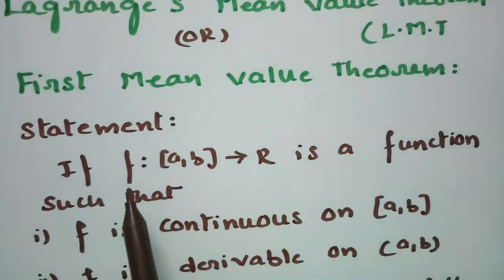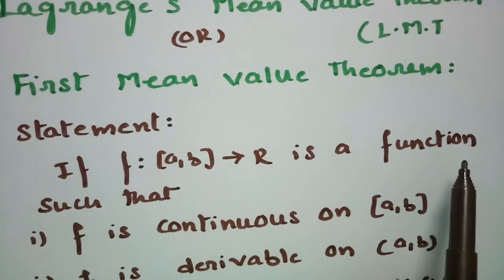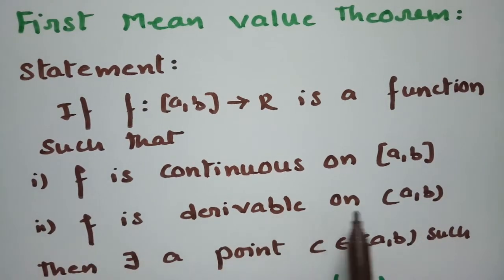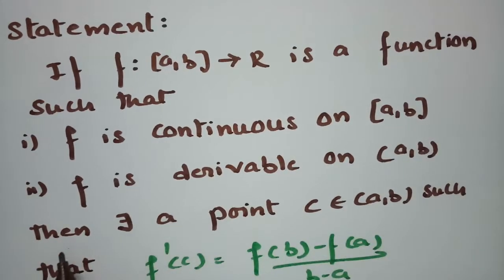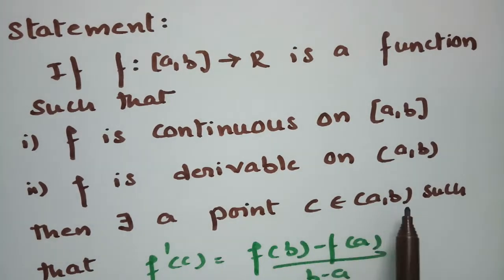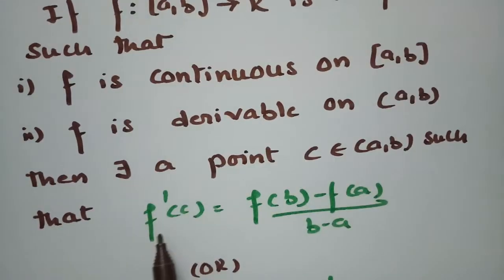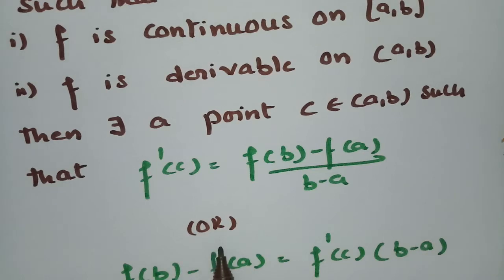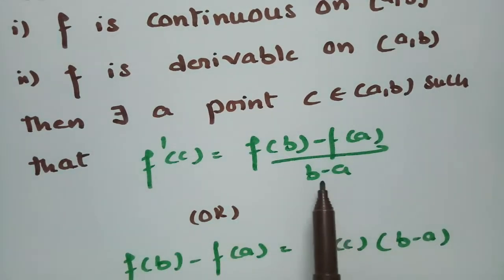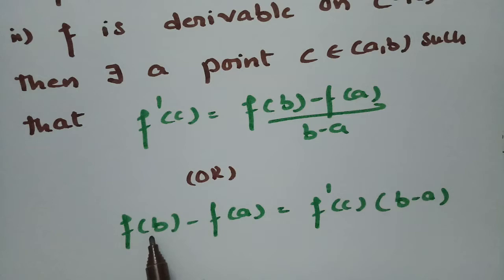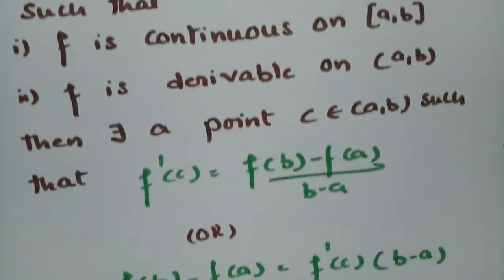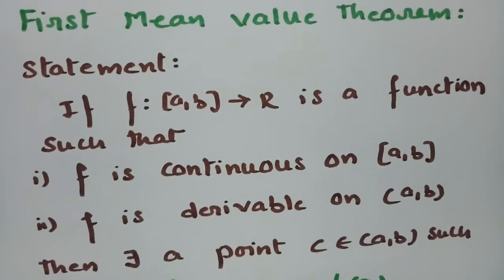The statement is: if f maps from closed [a, b] to ℝ is a function such that f is continuous on closed [a, b] and f is derivable on open (a, b), then there exists a point c belonging to open (a, b) such that f'(c) equals [f(b) − f(a)] / (b − a), or equivalently, f(b) − f(a) = f'(c) · (b − a). This is the statement of Lagrange's mean value theorem.